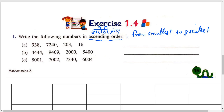Jab kabhi aap ascending order mein numbers ko arrange karte hain, to yeh dhyan rakhna hai ke pehle chota number likhna hai, after that bada, after that usse bada, and after that usse bada. Means: smaller, then bigger, then bigger, then bigger.